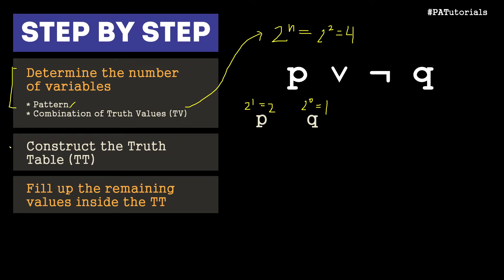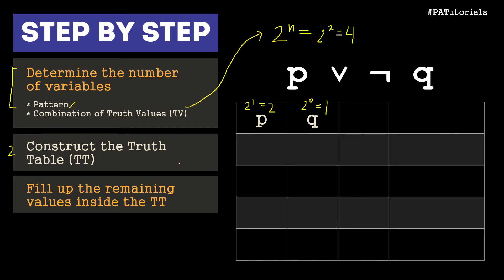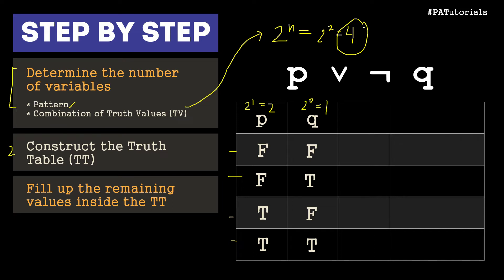We proceed to the second step, which is to construct the truth table. The pattern for P is 2, so two false and two true. For Q the pattern is 1, so alternating false, true, false, true — giving us 4 combinations. The single operator here is not Q, so we start there. We negate Q: false becomes true, true becomes false, false becomes true, true becomes false.